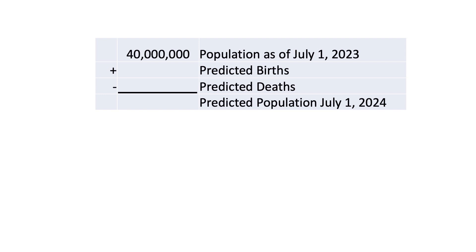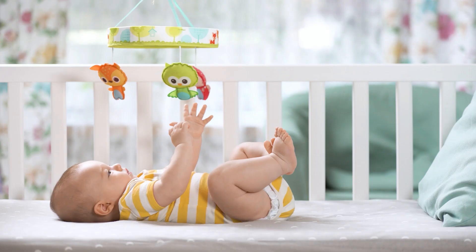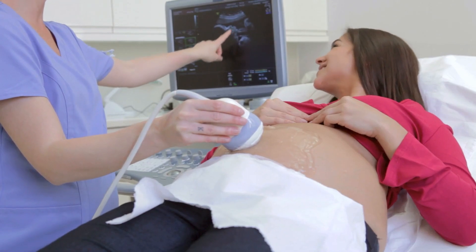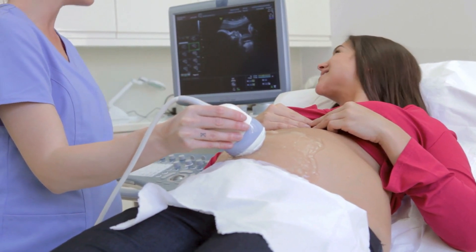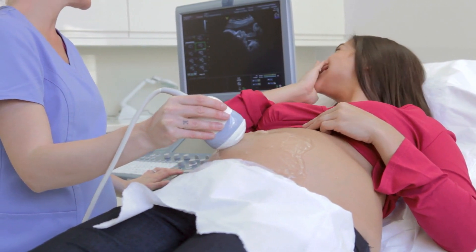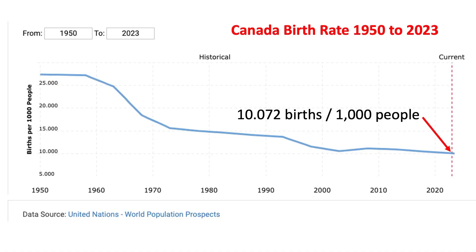Also, for the sake of simplicity and to keep this video relatively short, let's ignore people moving into and out of Canada and just focus on births and deaths each year. So how many births do we expect in Canada between July 1, 2023 and June 30, 2024? According to Macrotrends.net, the birth rate in Canada in 2023 is 10.072 births per 1,000 people living in Canada.